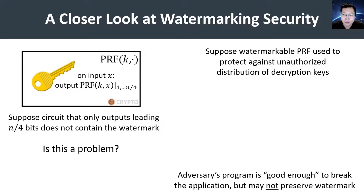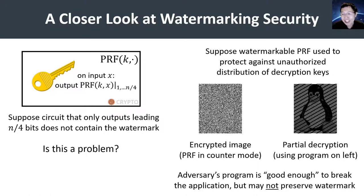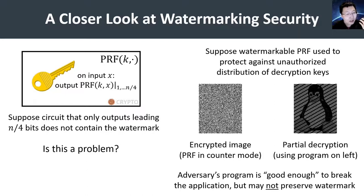Let's illustrate this using a simple example. On the left, we have an image that is encrypted using a standard PRF-based encryption scheme, say counter mode, and now suppose we run our decryption program that only recovers the first n/4 bits of the pseudorandom function on this encrypted image. Just by visual inspection, it is pretty clear what the image is encrypting, and for all intents and purposes, this program actually functions as a pretty good decryption algorithm. However, the watermarking security definitions provide no guarantees on whether we can extract the mark from this program. So if we're depending on the watermarking scheme to identify who leaked or compromised a particular key, such a decryption program that breaks security of the encryption scheme would not provide any of the watermarking benefits.